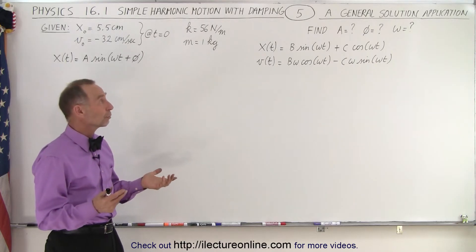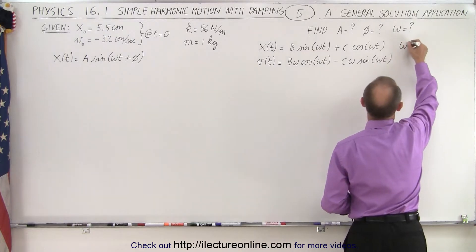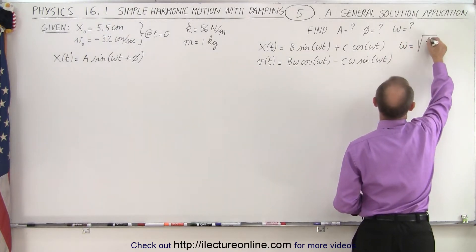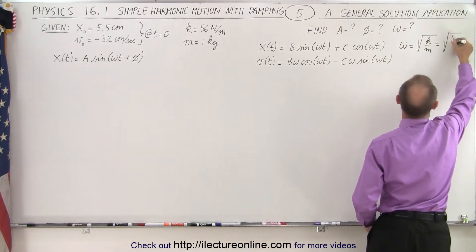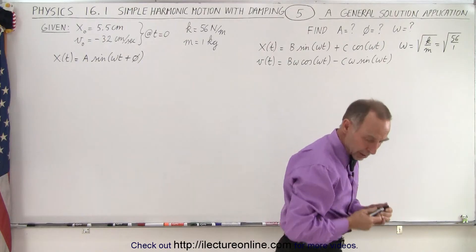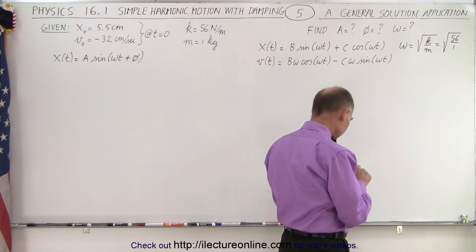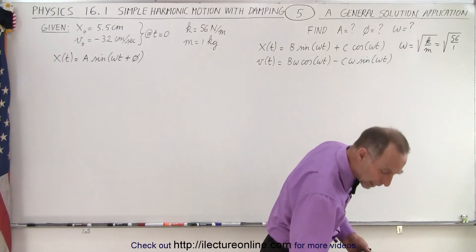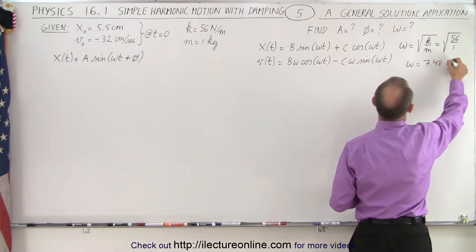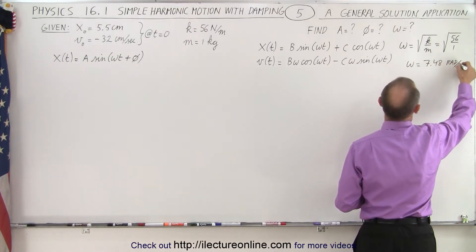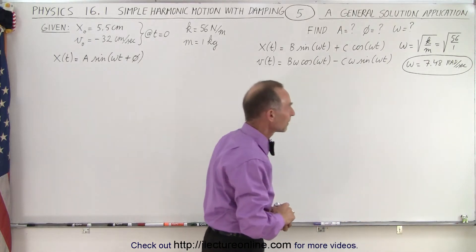So the first thing we can do is find omega. That's fairly easy. We can say that omega is equal to the square root of k over m. So that's equal to the square root of 56 over 1. If we take 56, take the square root, we get 7.48. Therefore, omega is equal to 7.48, and that would be radians per second. Those are the units of omega, the angular frequency.